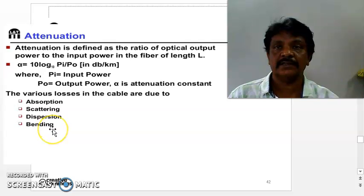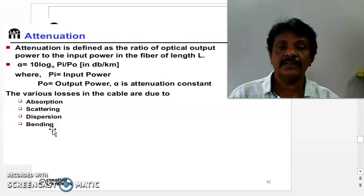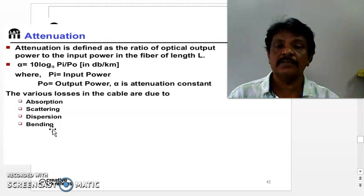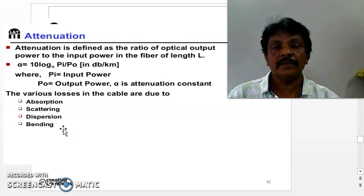The next one is bending losses. An optical fiber is used between transmitter and receiver. There may be many kinds of bending possible. Due to the bending, there is a loss in the optical signal that is referred to as bending losses. These are the four basic losses of signal in the optical fiber.